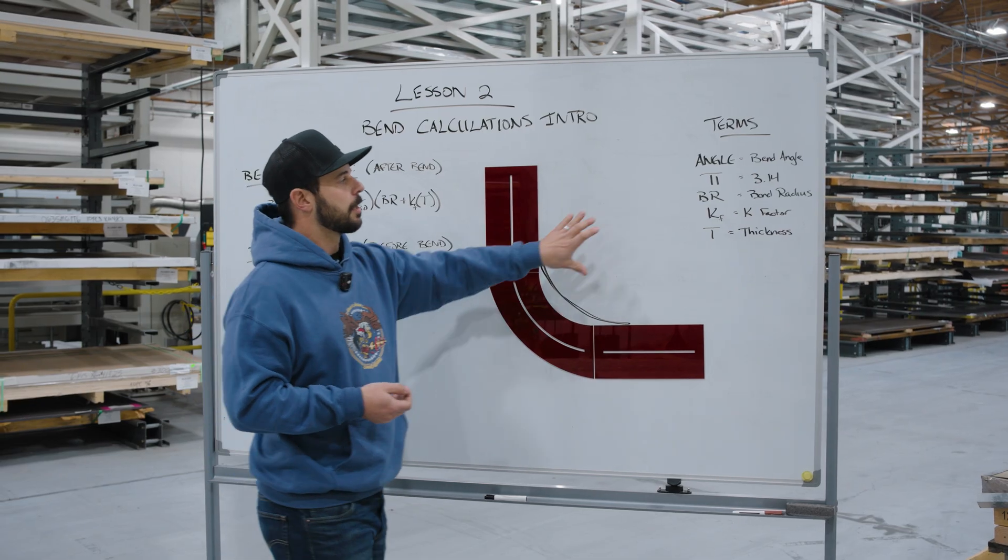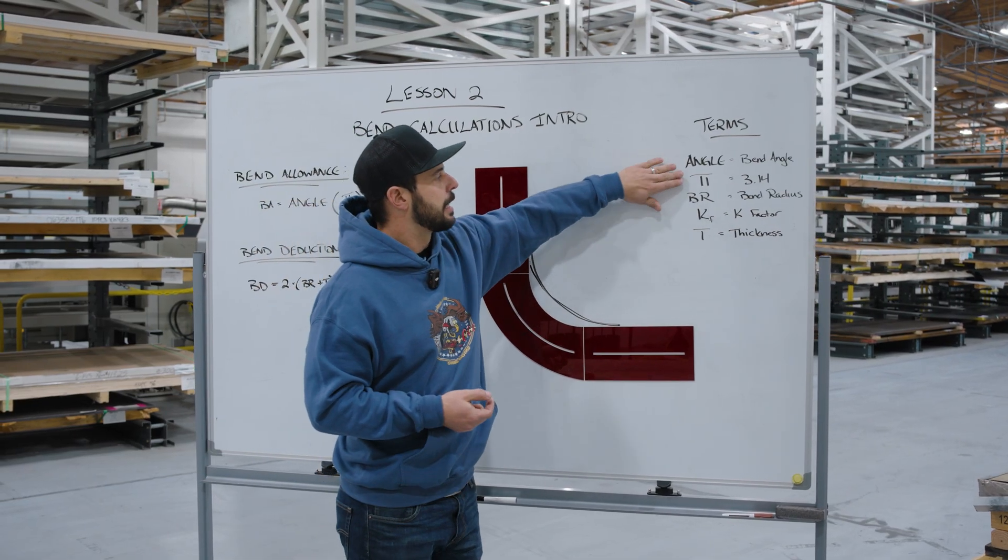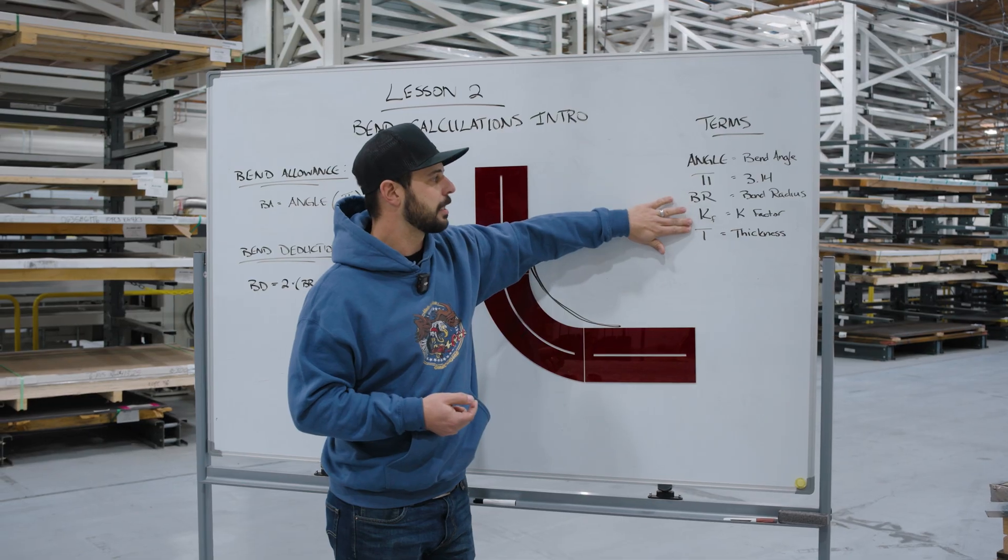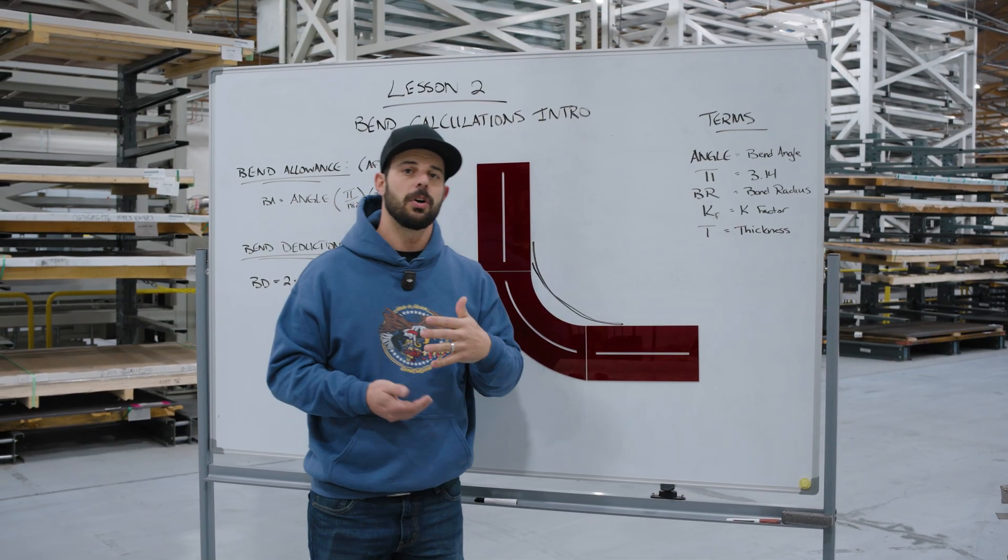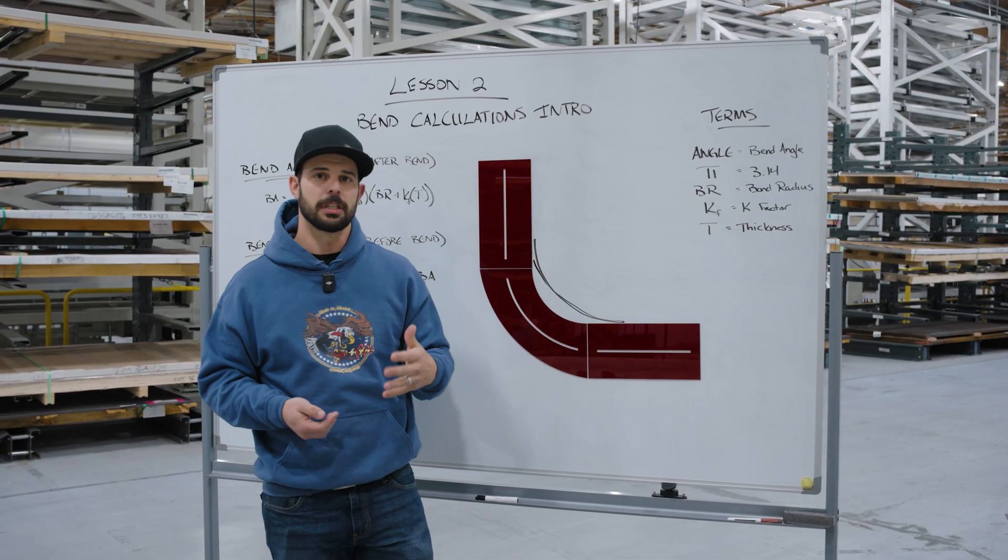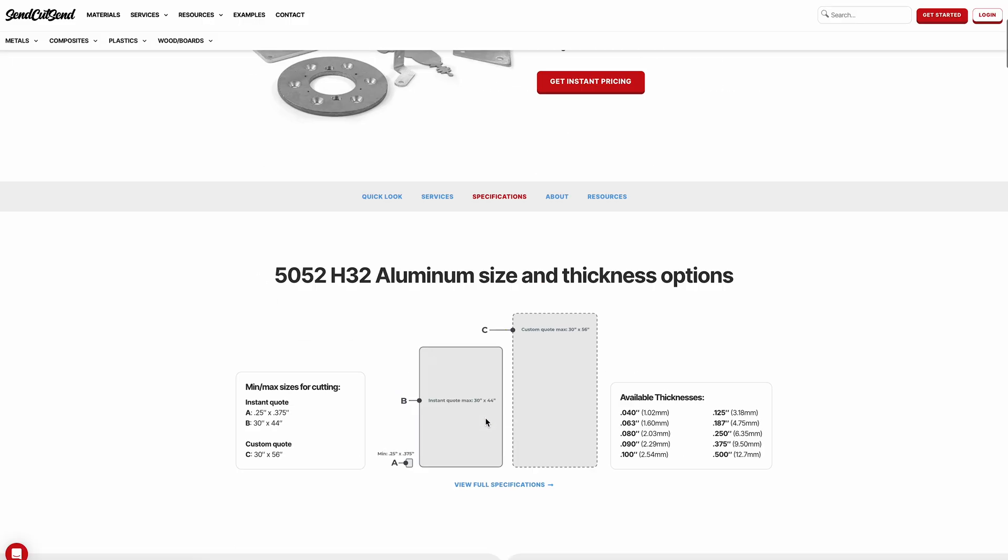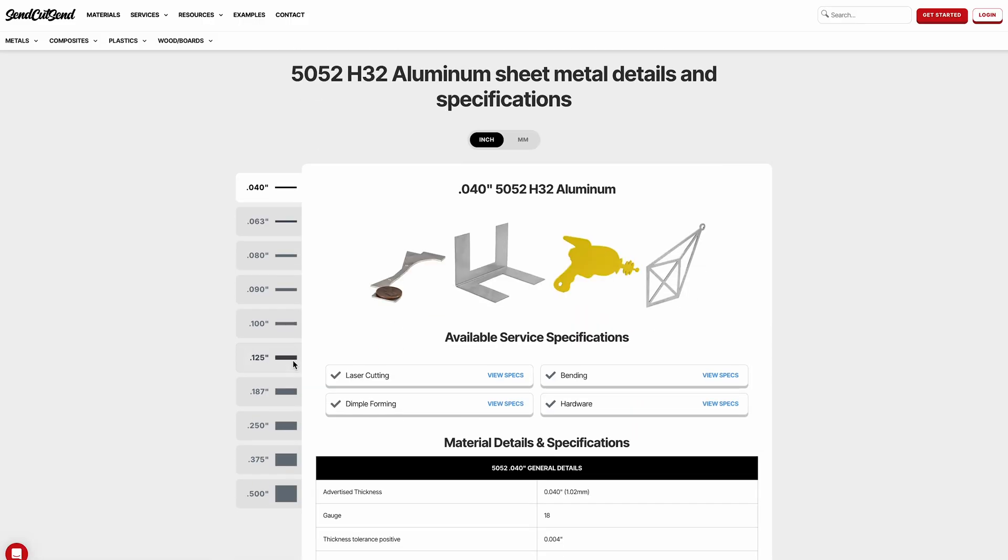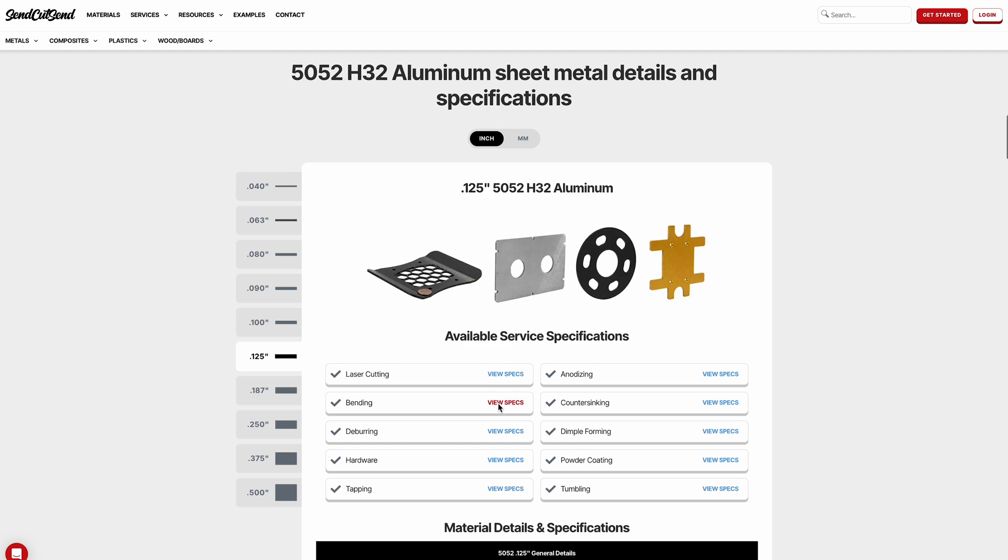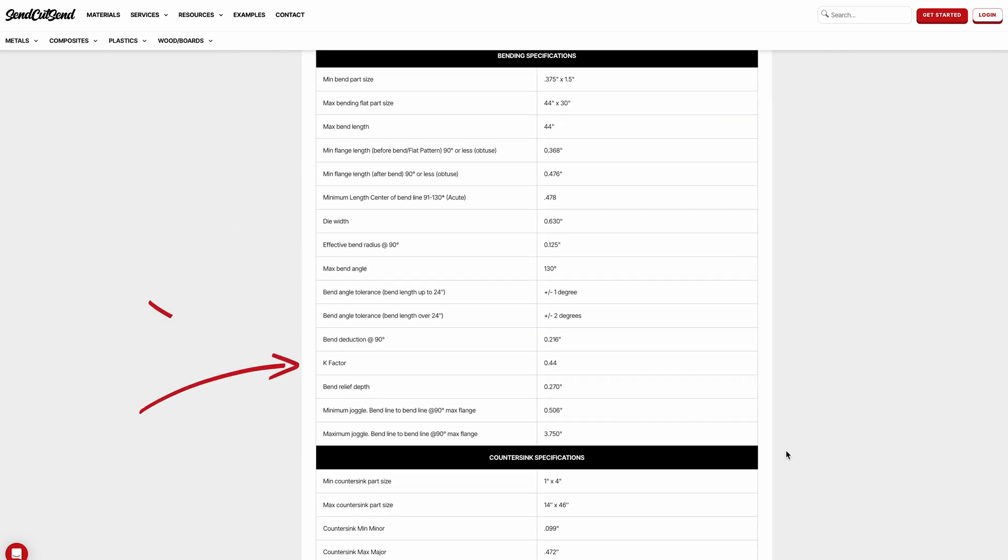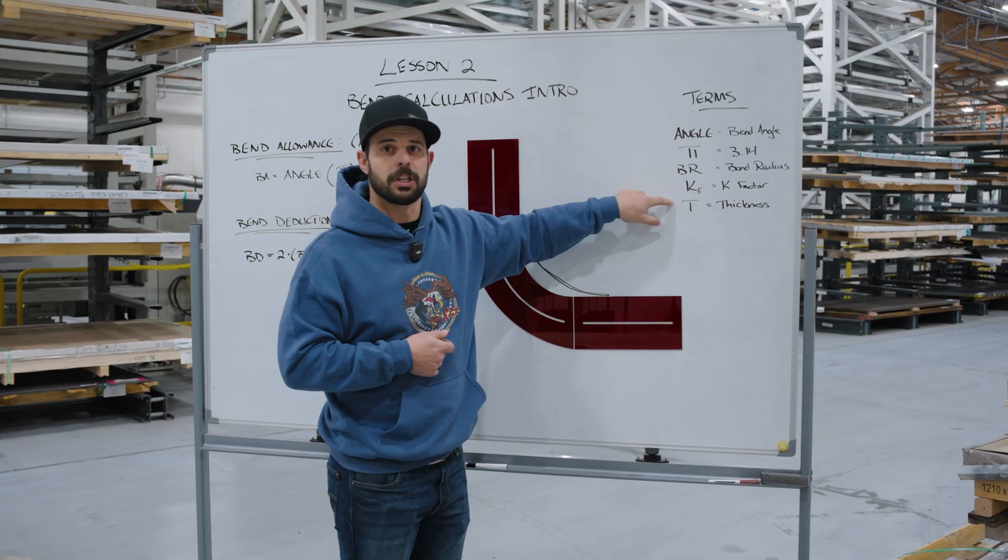The last thing I want to talk about in this lesson is that the bend radius, k-factor, and thickness are all determined by the material you select on our website. If you go to our material guidelines and select, say, aluminum 5052 eighth inch, we'll have a recommended k-factor and tell you the punch or bend radius you'll get on your parts. When you're designing, make sure those are correctly put in.